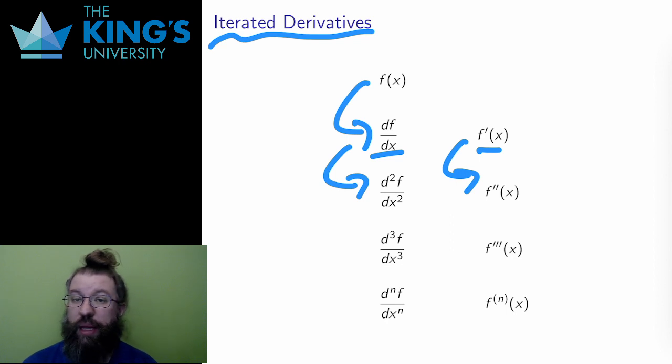The notation, using Leibniz notation, is to put exponents in the differentiation symbol, indicating how many times to iterate. This d squared f over dx squared means take the derivative twice, and so on.